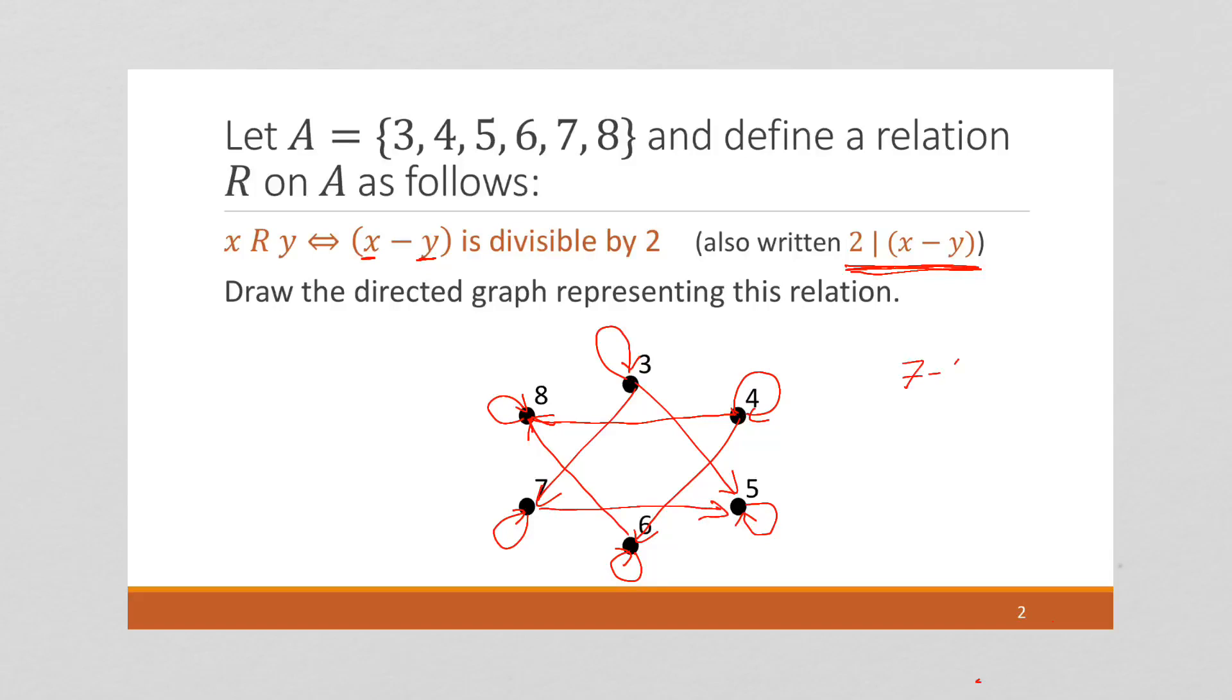7 minus 5 is 2, and 5 minus 7 is going to be negative 2. So, each one of these, that we have an arrow going one way, we can also create an arrow going back the other way.